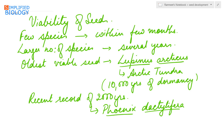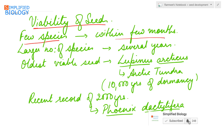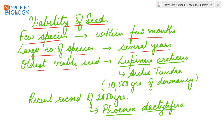Viability of seeds means the time till they remain functional or are able to germinate. There are few species in which seeds remain viable for just a few months, while in a larger number of species they are viable for several years. The oldest viable seed known is that of Lupinus arcticus, which was excavated from the Arctic tundra and had 10,000 years of dormancy. A more recent record of 2,000 years of dormancy is seen in seeds of Phoenix dactylifera, that is date palm.